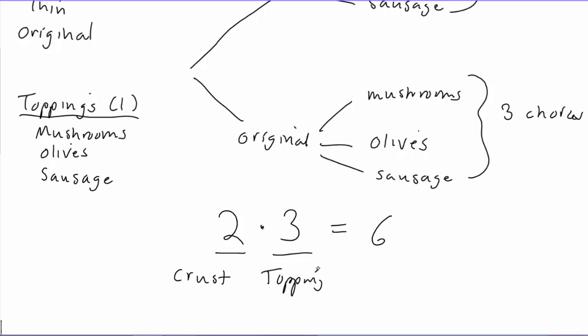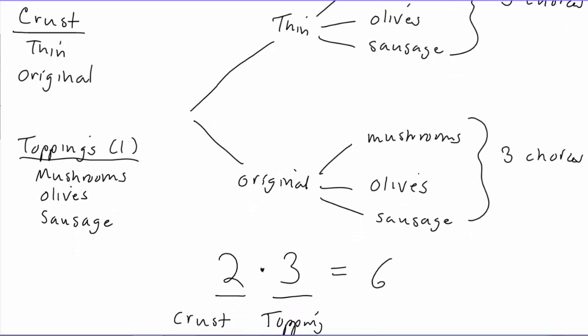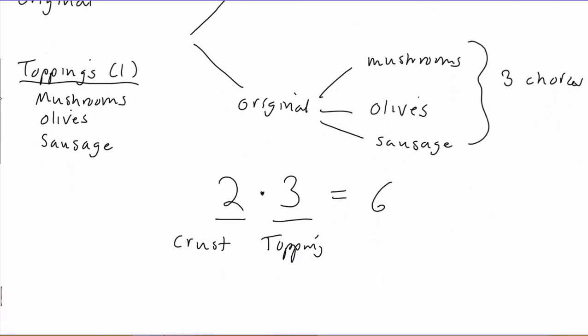Why were we allowed to just multiply these two numbers? It comes from the fact that no matter which choice of crust we made, we had the same number of toppings. If we went with thin crust, we had all three choices of toppings. If we went with original crust, same thing — all three toppings. So we had two groups with three objects in each group, and we can just multiply them together. This way of thinking can be generalized so we can apply it in situations where it's impractical to list all the different possibilities.